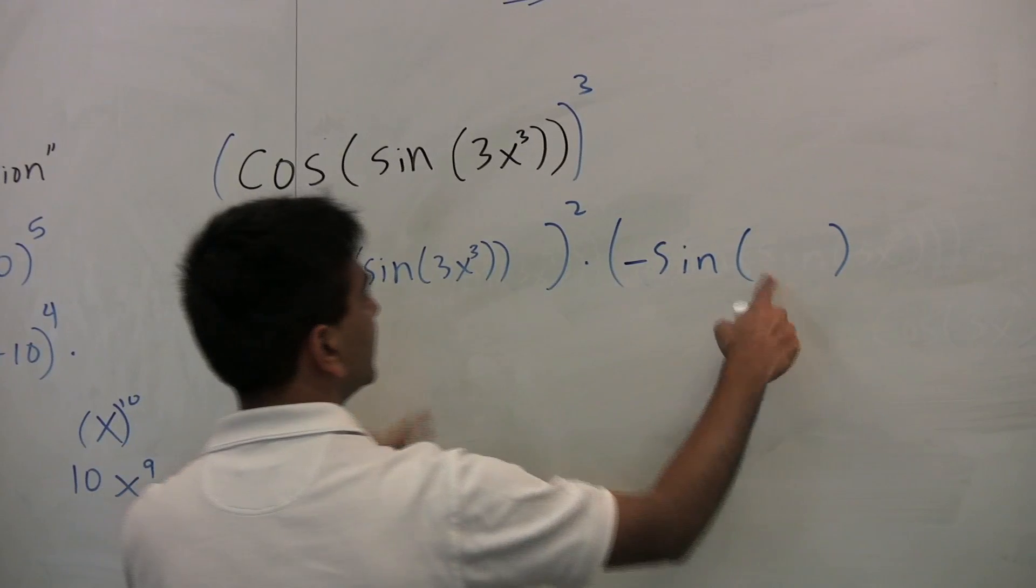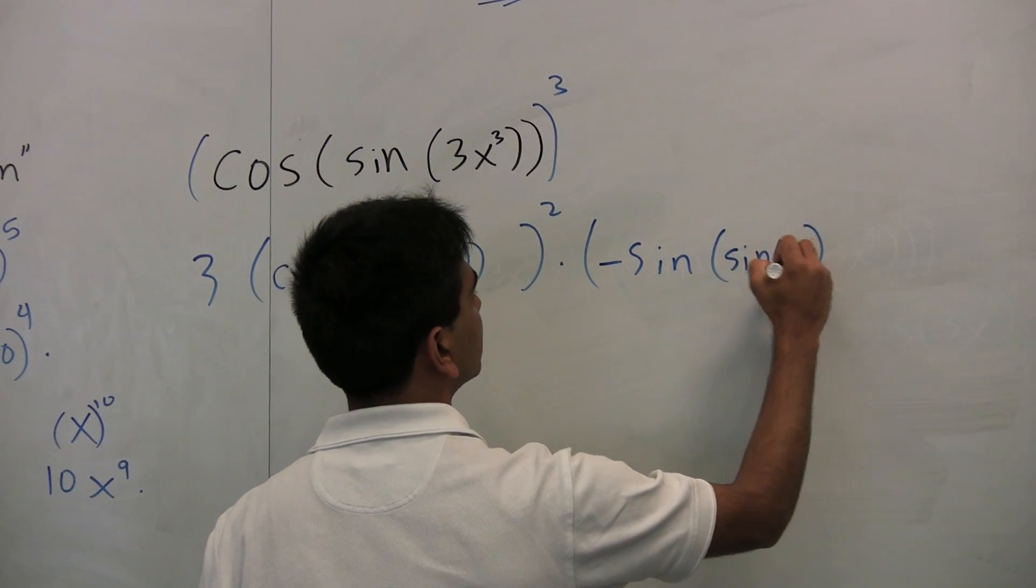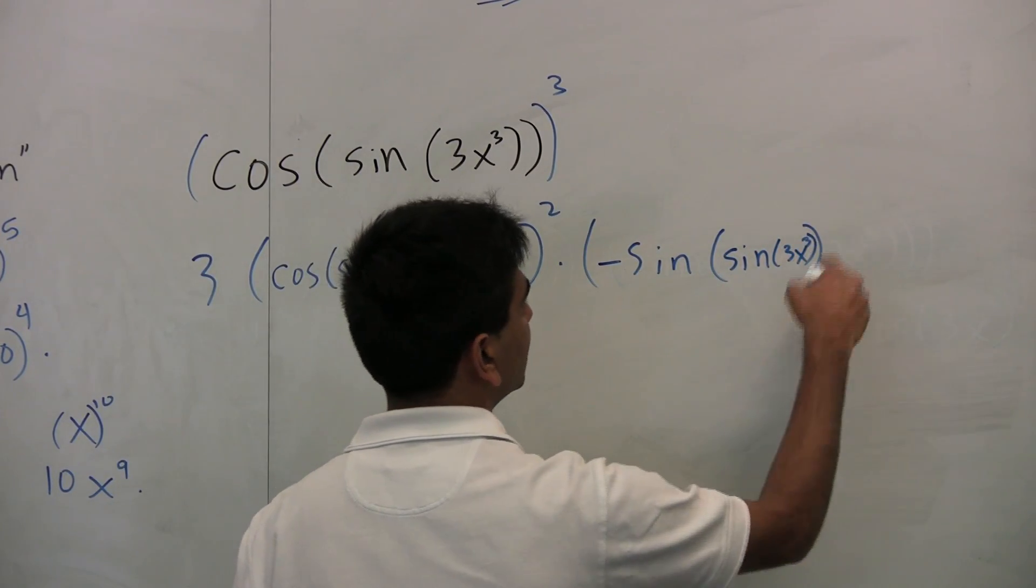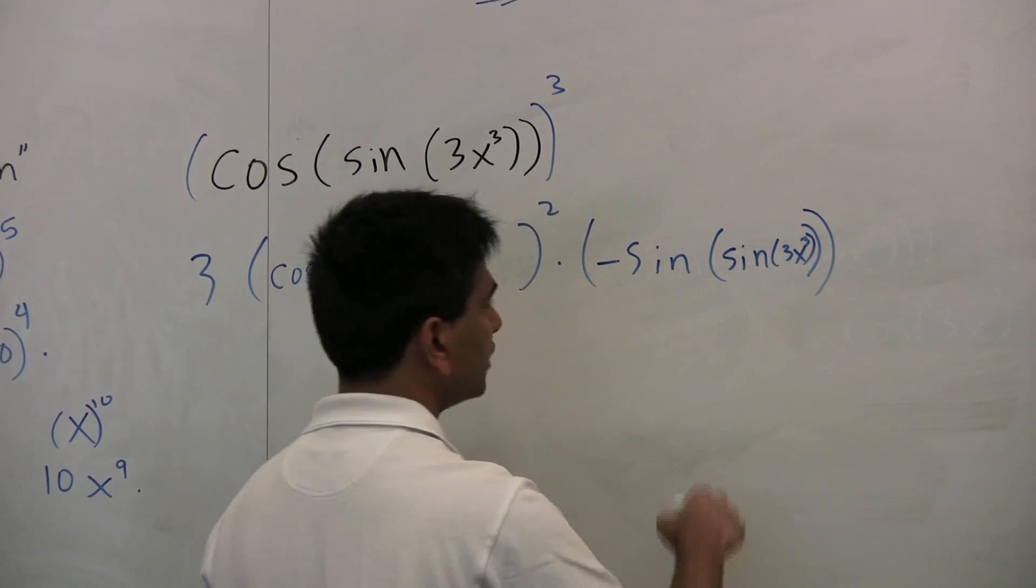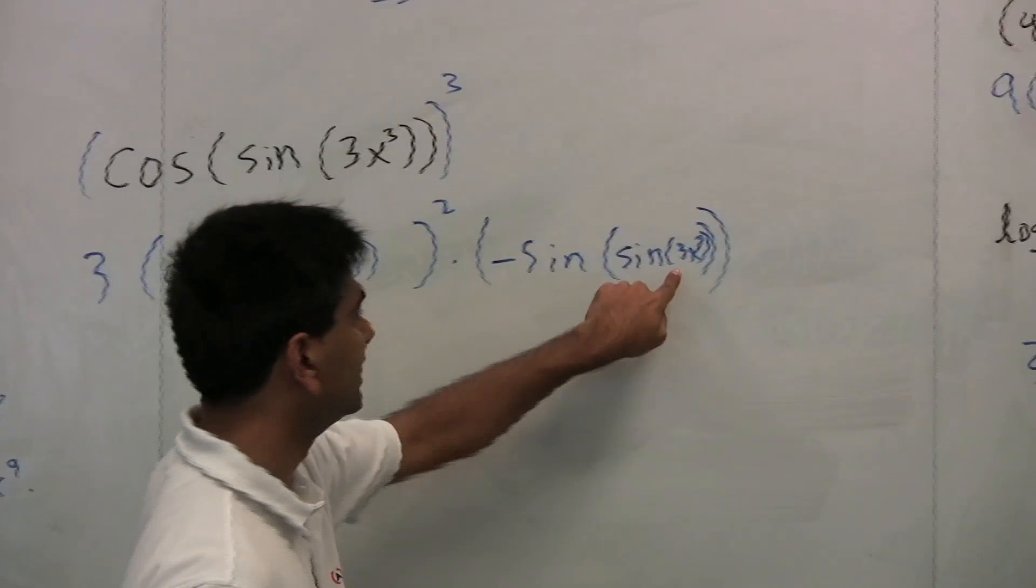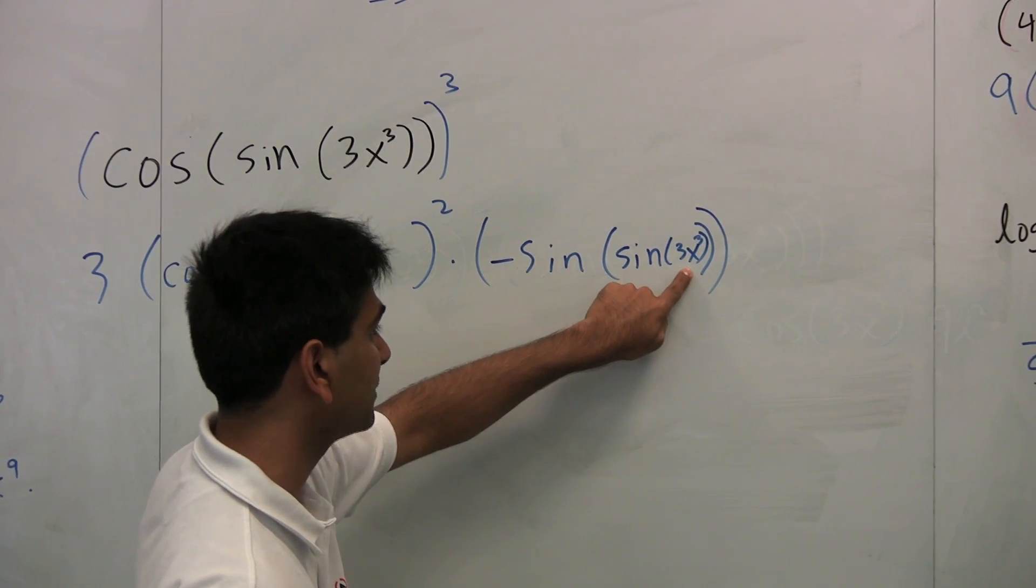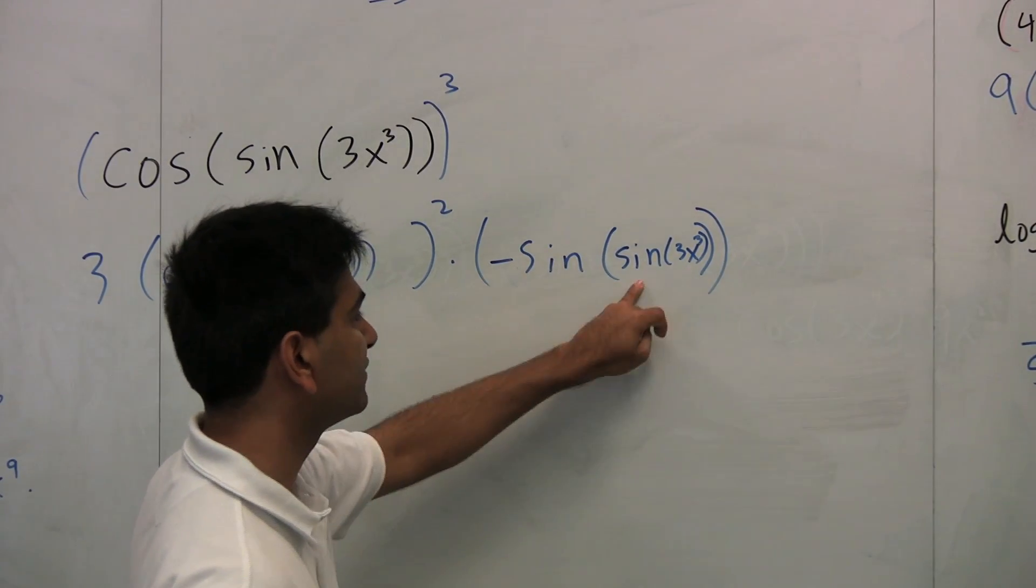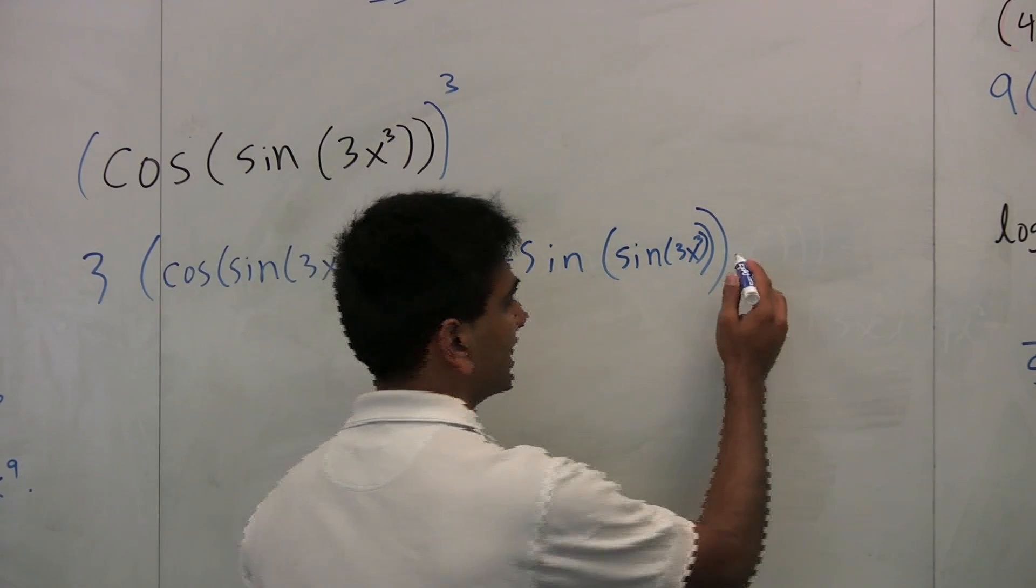So what guy do we have in here? sin(3x³). And now again, we want to multiply by the derivative of sin(3x³). So the derivative of sin(3x³), again, notice we have to use a chain rule again, because the inside function now is 3x³. So the derivative of sine of anything is cosine of that something, again, times its derivative.